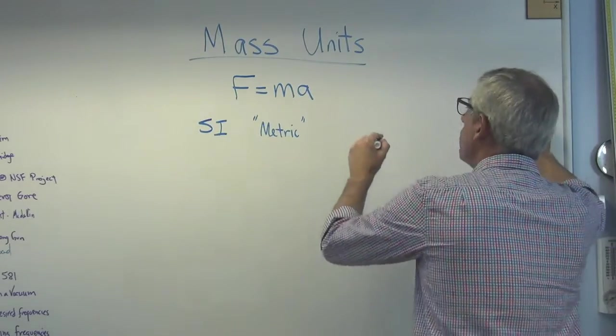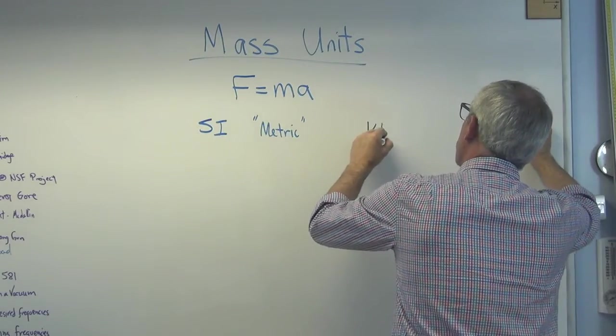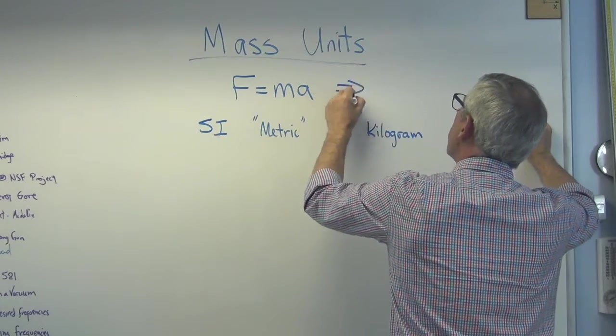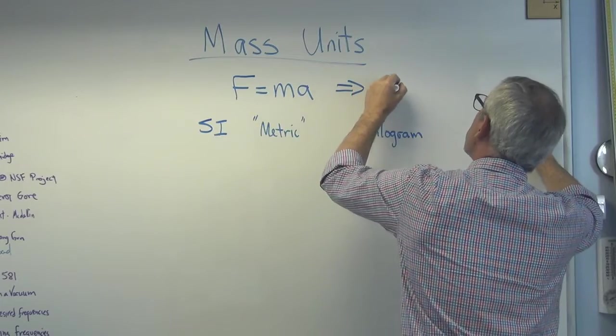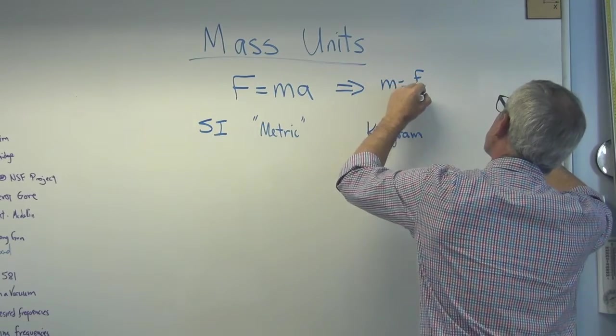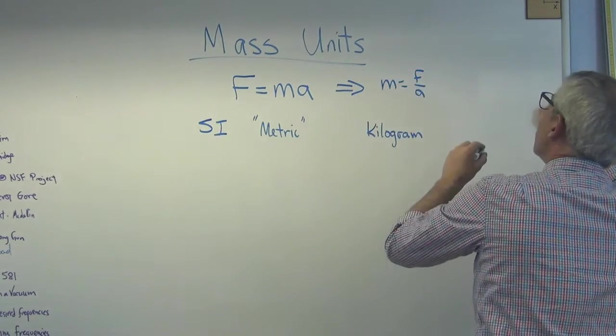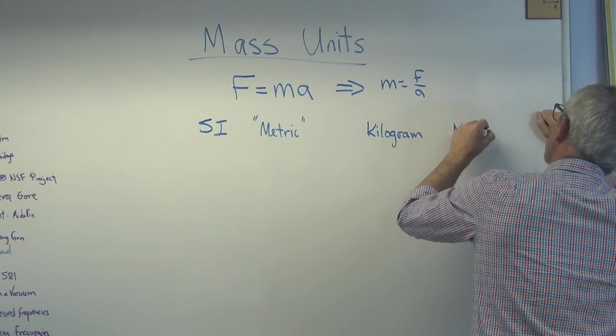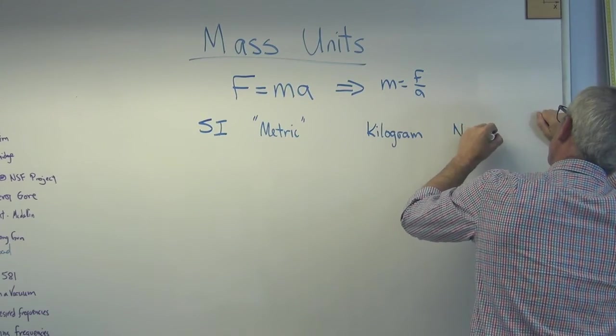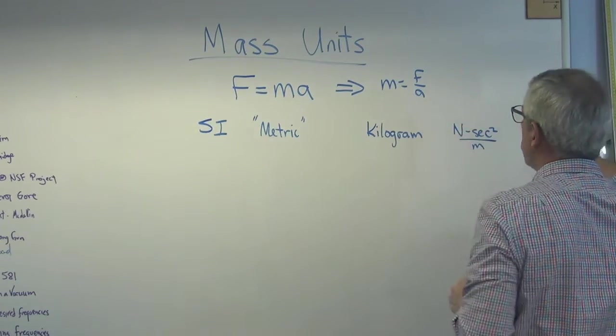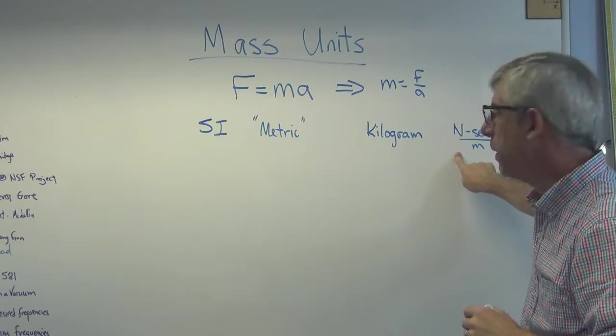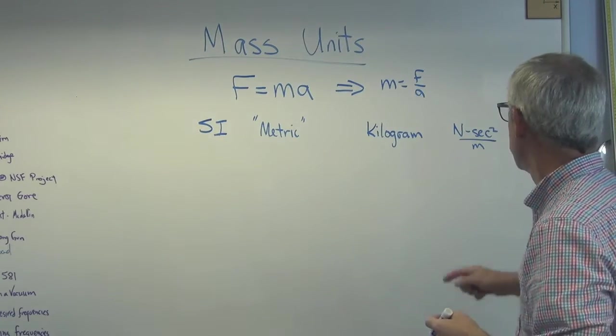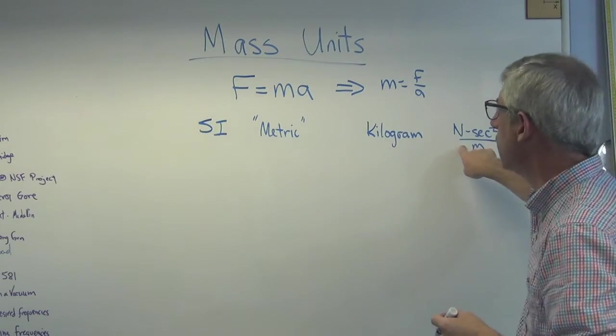So the unit of mass is the kilogram. You want to think about this mathematically, you can say mass is force over acceleration. So mass is going to be Newton second squared per meter, if you want to think. You don't usually write it out that way, because the definition of a unit is a kilogram meter per second squared. So we're kind of hitting it backwards, but that's what that is.